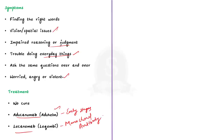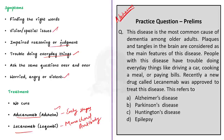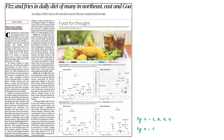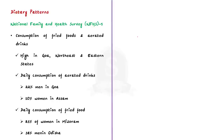Through this discussion, we came to know about the disease Alzheimer's. Now let's move on to the next article — a data point article showing dietary patterns in different states. It is about the consumption of fried food and aerated drinks. Let us see the important data from the National Family and Health Survey 5 conducted in 2019 to 2021. As per the survey, the consumption of fried foods and aerated drinks is relatively higher in the states of Goa and the northeastern and eastern states compared to the rest of India.